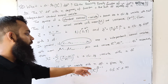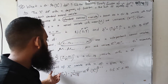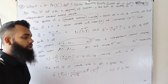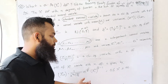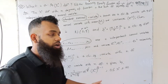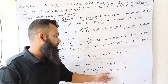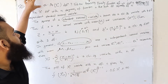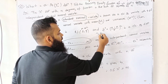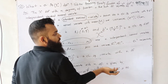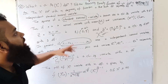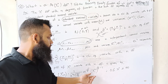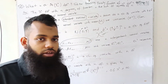The probability density function (PDF) of a Chi-square variate with n degrees of freedom is given by: f(chi_n squared) = 1 divided by [2^(n/2) · Gamma(n/2)] · e^(−chi_squared/2) · chi_squared^(n/2 − 1), for chi_squared greater than zero.